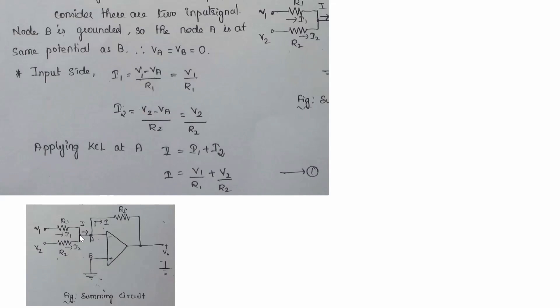For the derivation, since V1 and V2 are applied to the inverting terminal, we first apply the virtual ground concept. Node B is connected to ground, so Vb = 0, and therefore Va is also equal to zero.